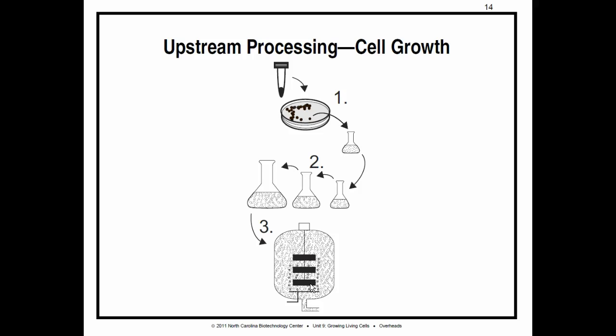Then they make what are called cell banks. These are collections of many little vials of these cells that are maintained in negative 70 degrees Celsius freezers or liquid nitrogen tanks. Liquid nitrogen is often used to help store cells.